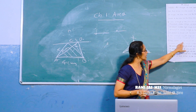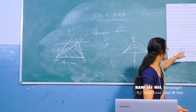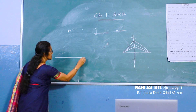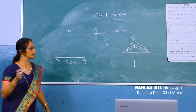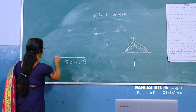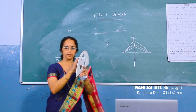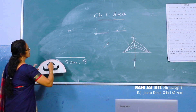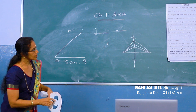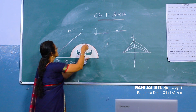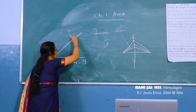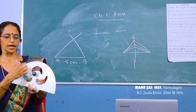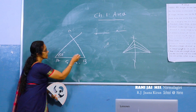Draw triangle ABC with AB = 5 cm, angle A = 50°, and angle B = 60°. Using a scale, measure AB = 5 cm. Take the protractor and mark 50° at A and 60° at B. Be careful — there are two scales on the protractor, inner and outer. Take the correct measure for 50° and 60°.